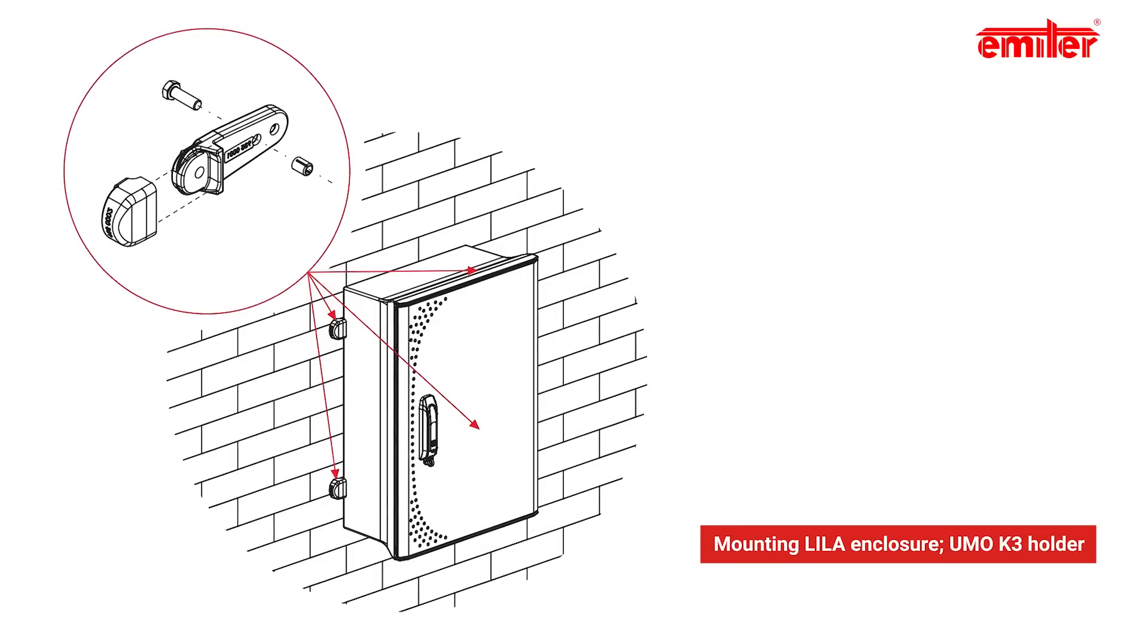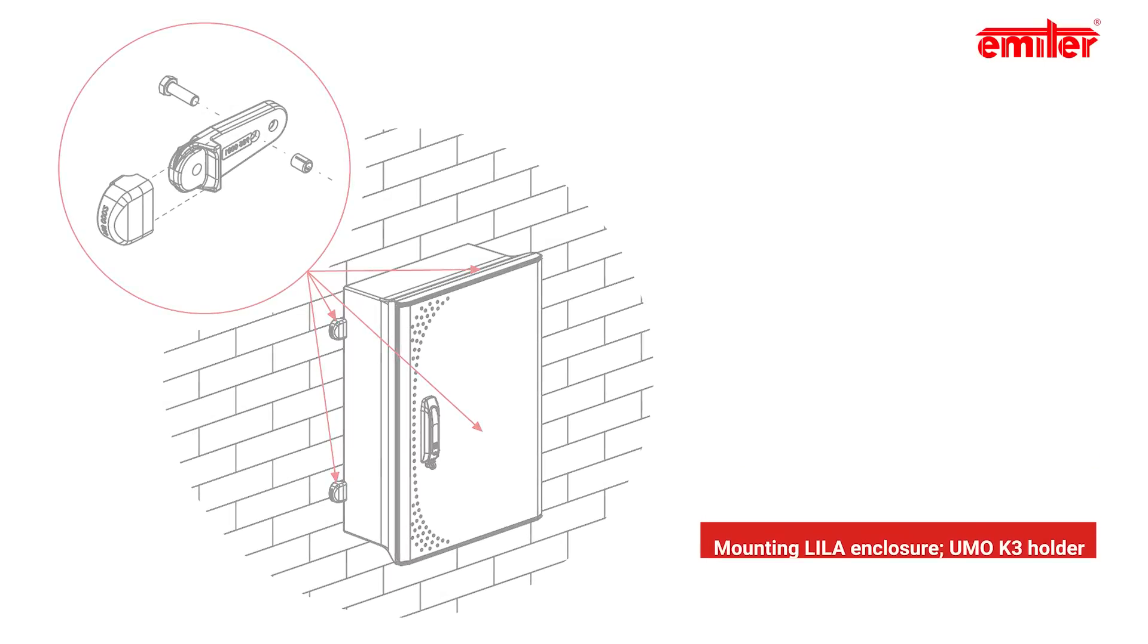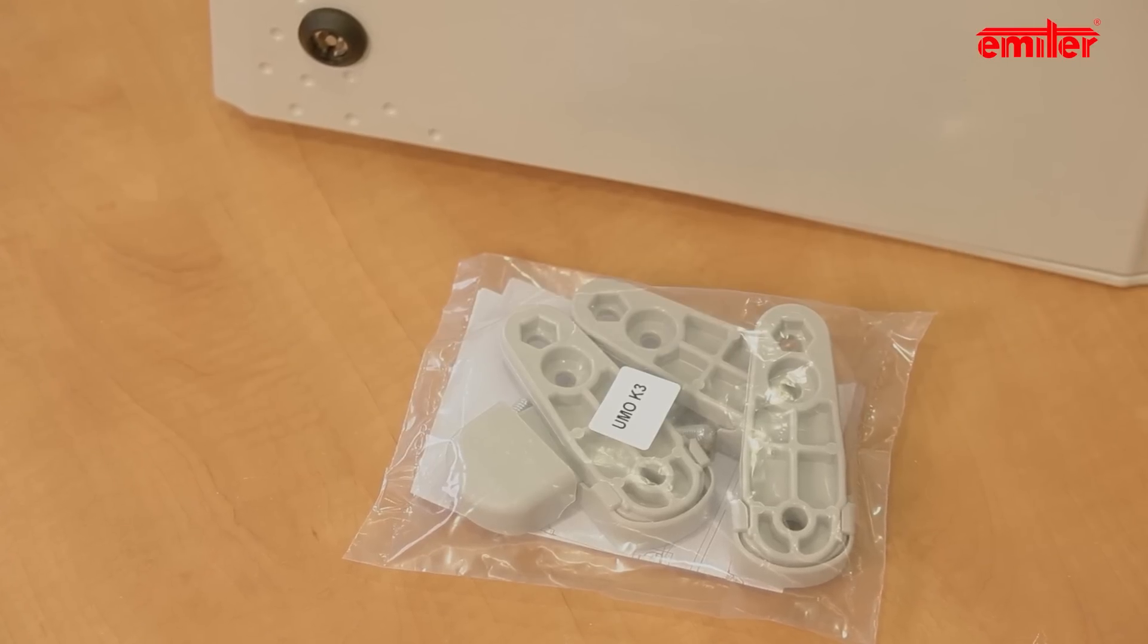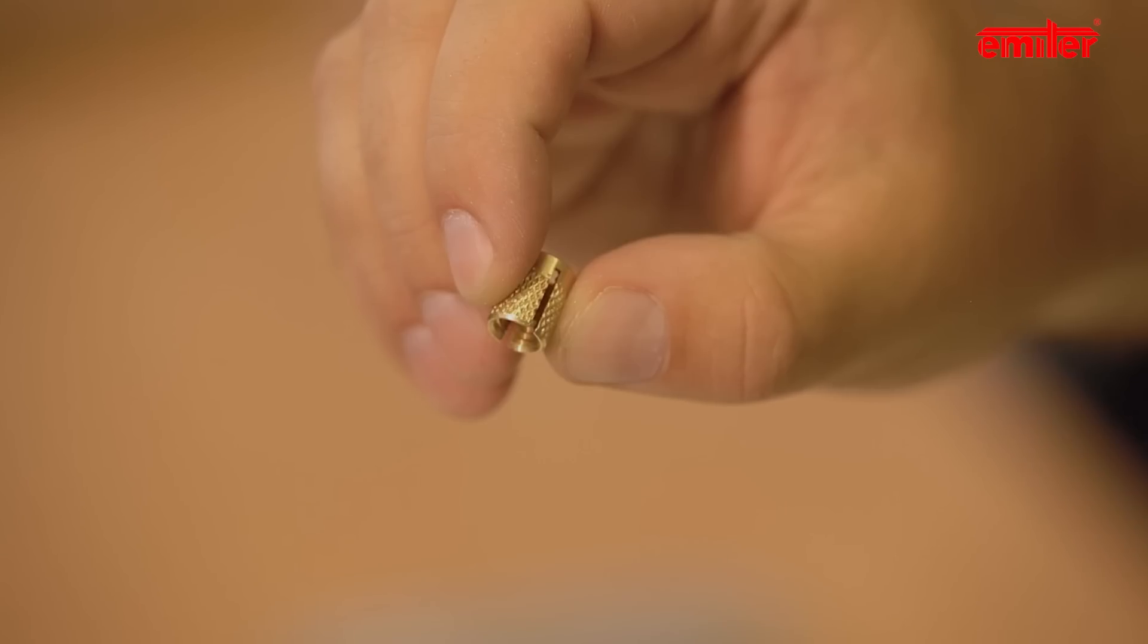Installation of the lila enclosure on a wall or metal frame is the same as in the case of hydra enclosures. The UMWK bracket includes a set of parts for mounting one enclosure. The assembly begins with inserting brass inserts into the holes in the corners of the rear surface of the enclosure.